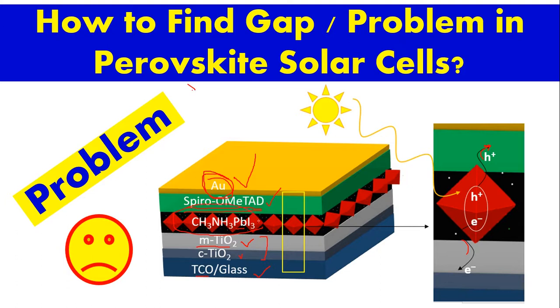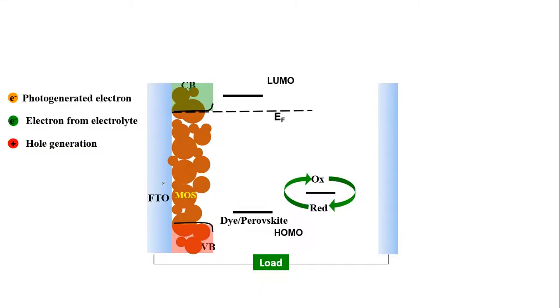This perovskite basically, if you look here, contains lead. And this lead is hazardous for the environment. This is a heavy metal and we know all heavy metals are hazardous. So it can create problems. I will show what material we can replace this lead with. But let us see the working principle of this perovskite solar cell or dye-sensitized solar cell.